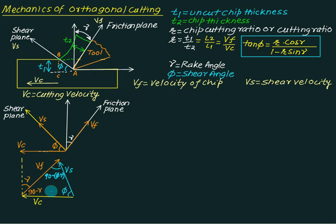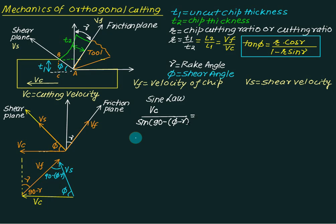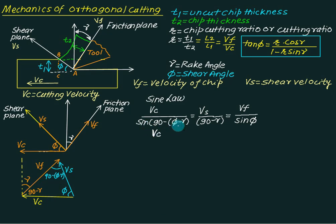We verify: phi plus gamma plus (90 minus phi minus gamma) plus 90 equals 180, confirming the triangle is correct. Applying the sine law — the length of each side is proportional to the sine of the opposite angle — we get: vc divided by sin(90 minus phi minus gamma) equals vs divided by sin(90 minus gamma) equals vf divided by sin(phi). Using sin(90 minus theta) equals cos(theta): vc divided by cos(phi minus gamma) equals vs divided by cos(gamma) equals vf divided by sin(phi).